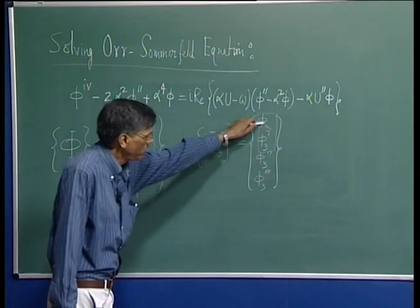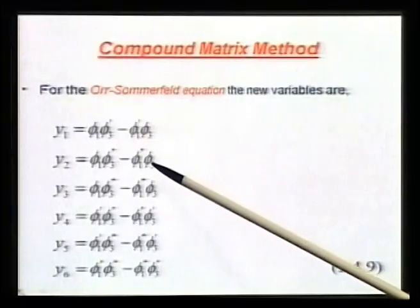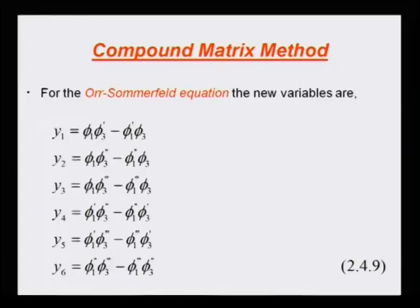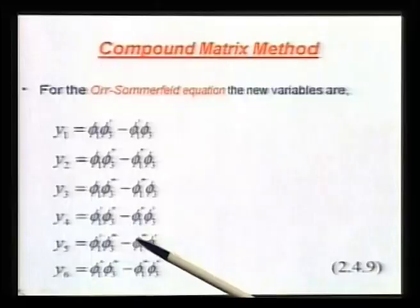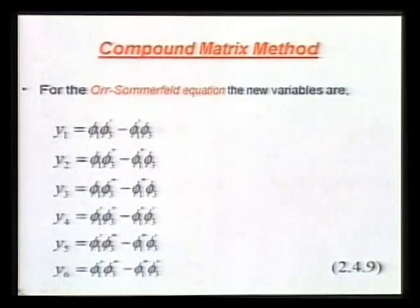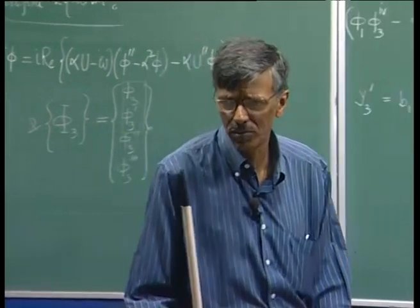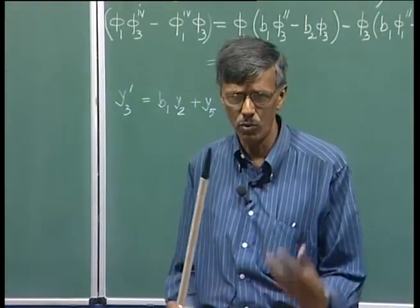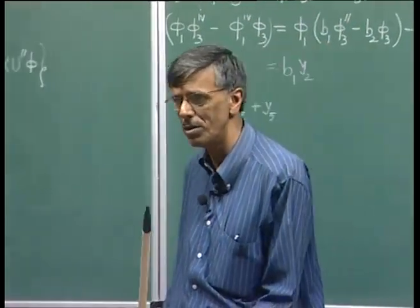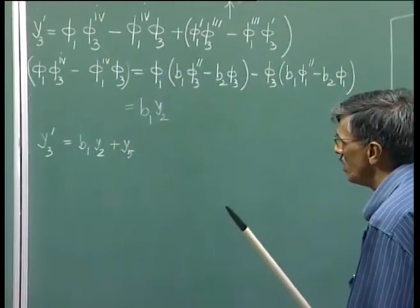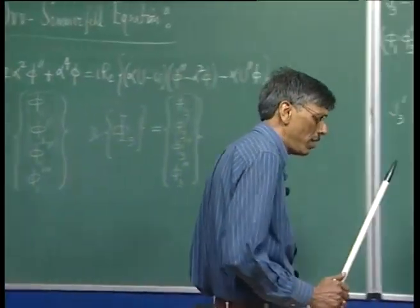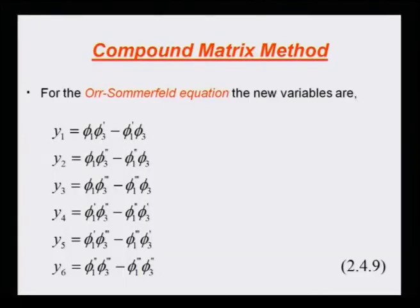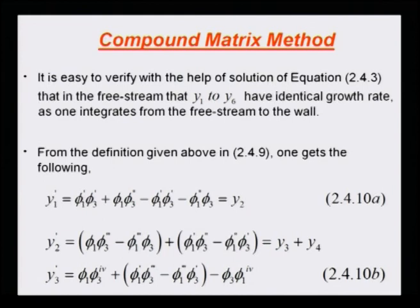Taking the first and third elements from both column vectors gives y_2; first and fourth gives y_3. Taking the second and third gives y_4, second and fourth gives y_5, and third and fourth gives y_6. These are all the 4C2 possibilities, because we have four fundamental solutions and are picking two at a time. When we go from the phi variables to these y variables, we need to derive a set of governing equations for the compound matrix variables.